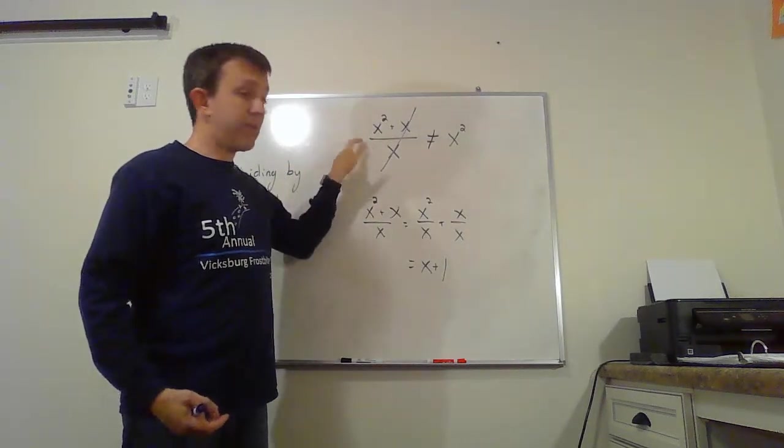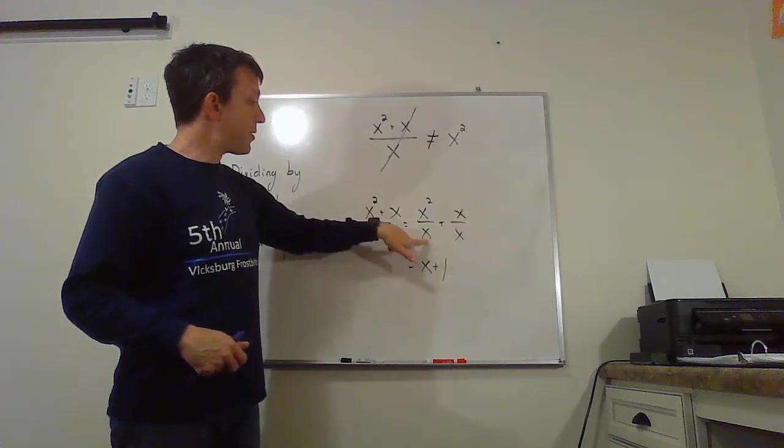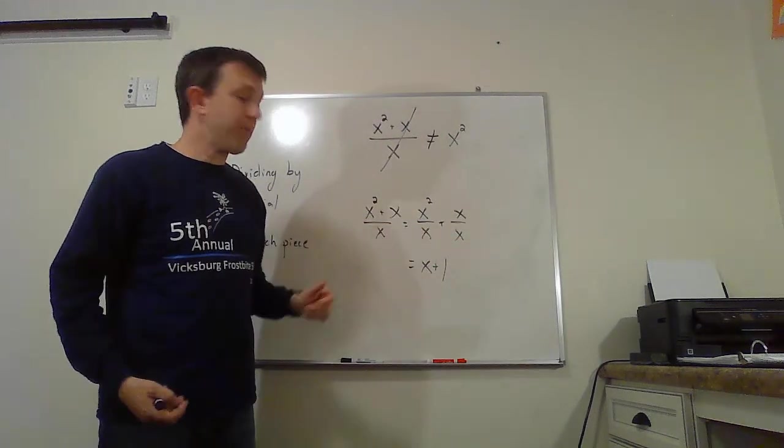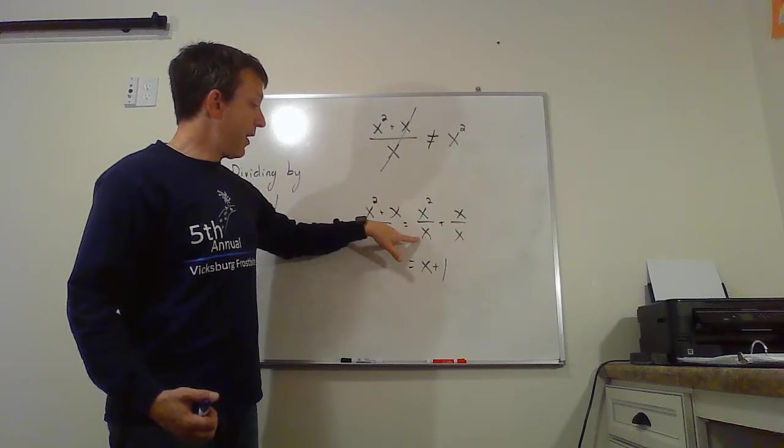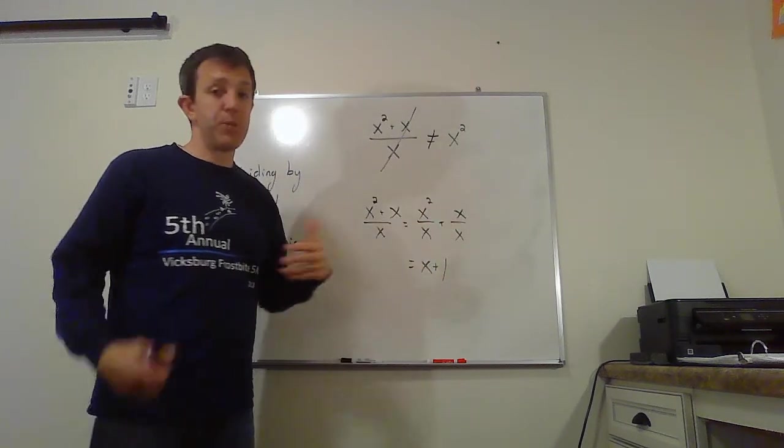So this is the division we were just talking about, though. I can take it instead and split it up into two separate little division problems. x squared divided by x, which is x. And then x divided by x, which is one.